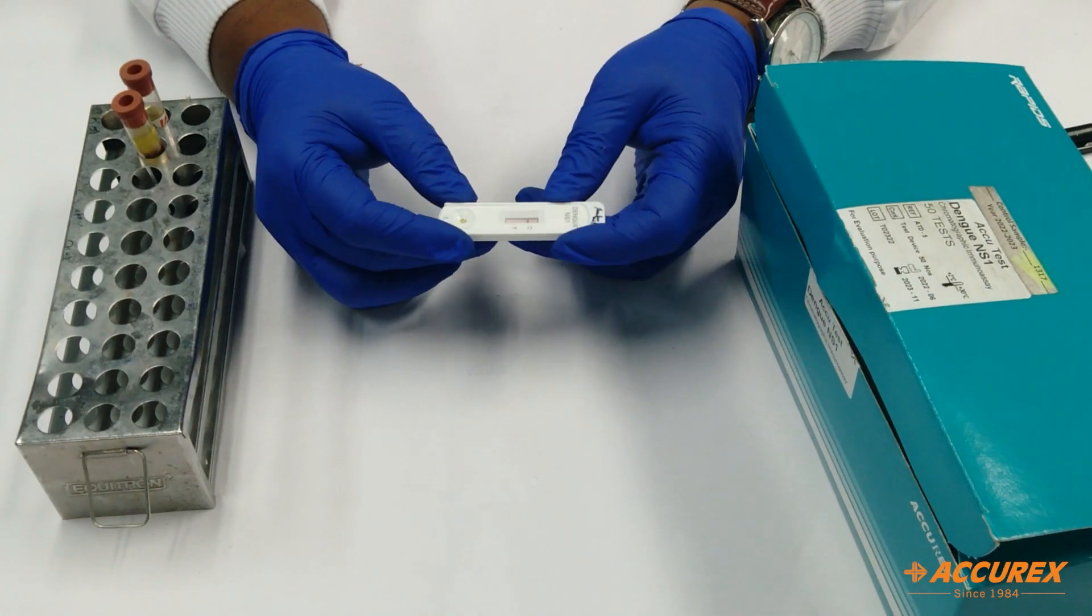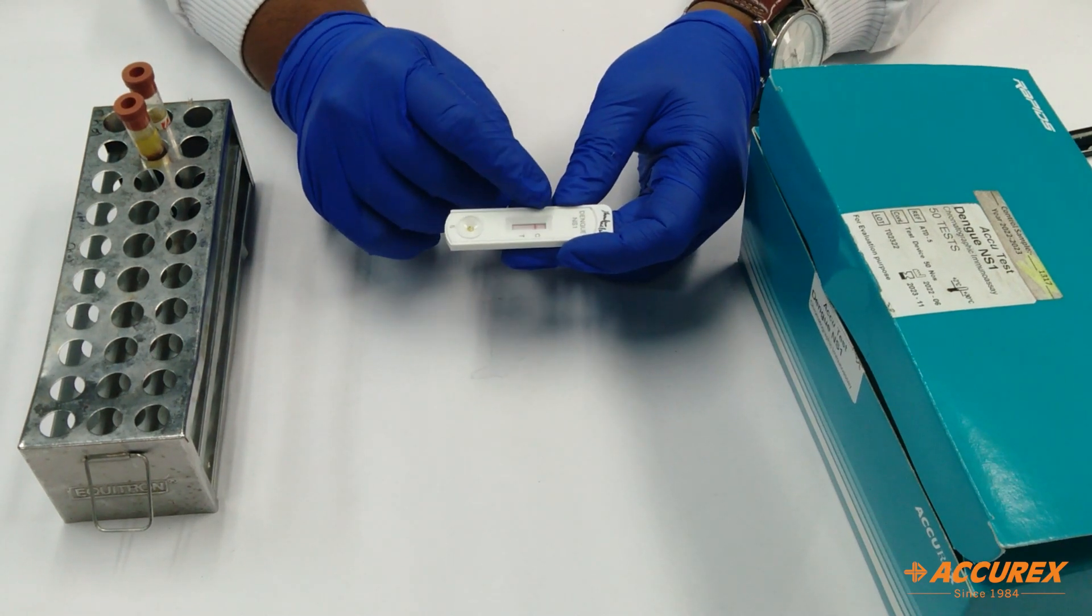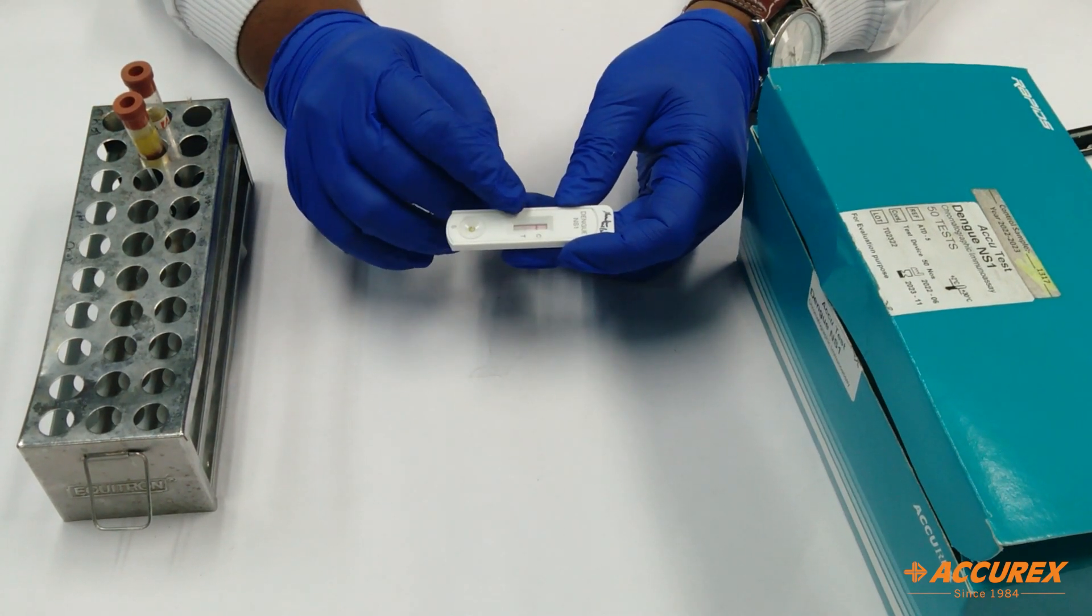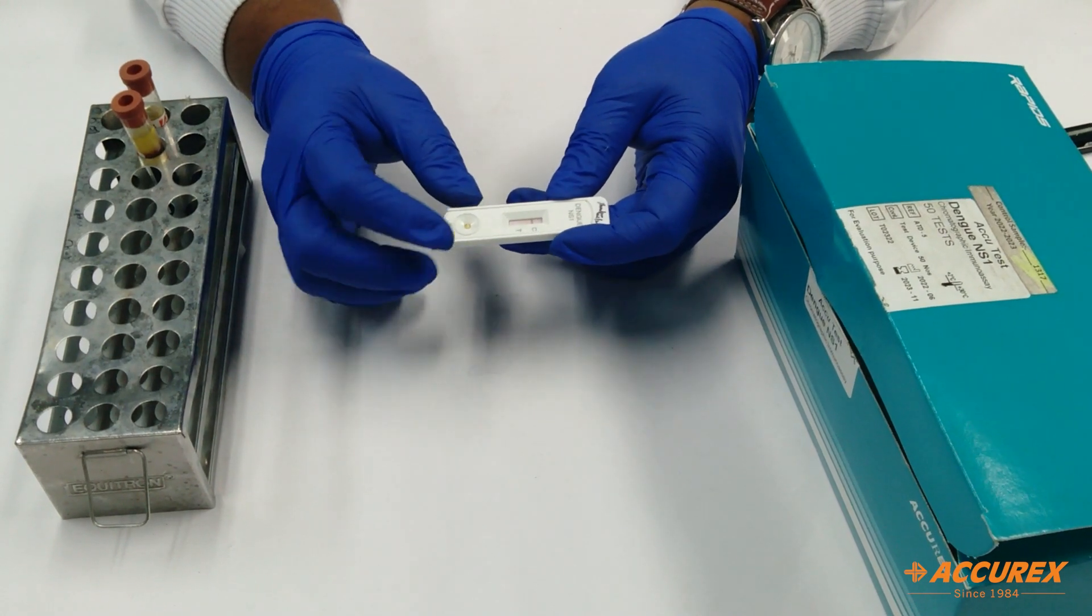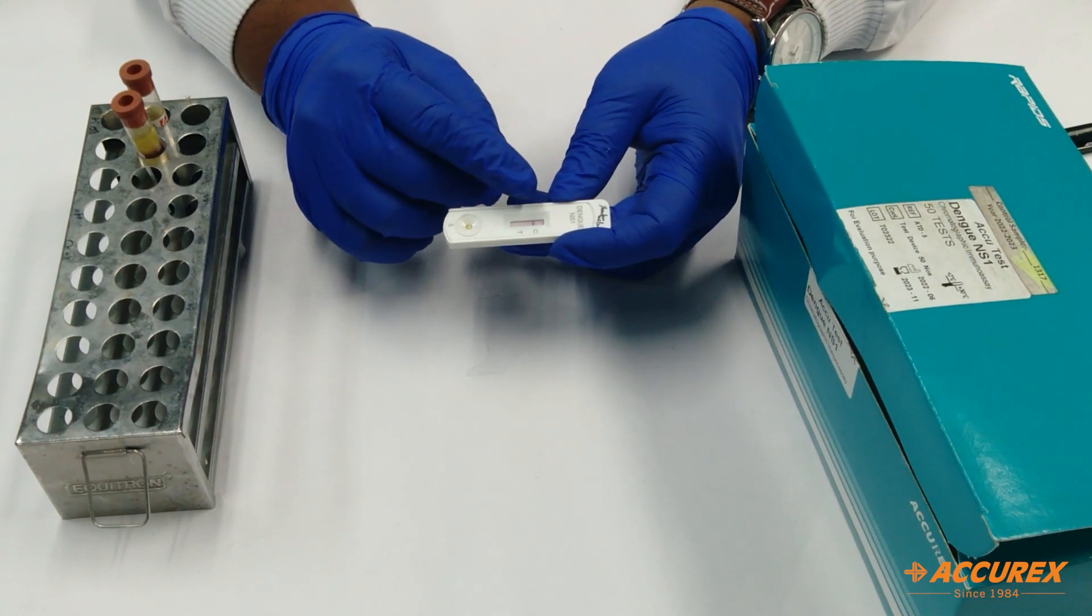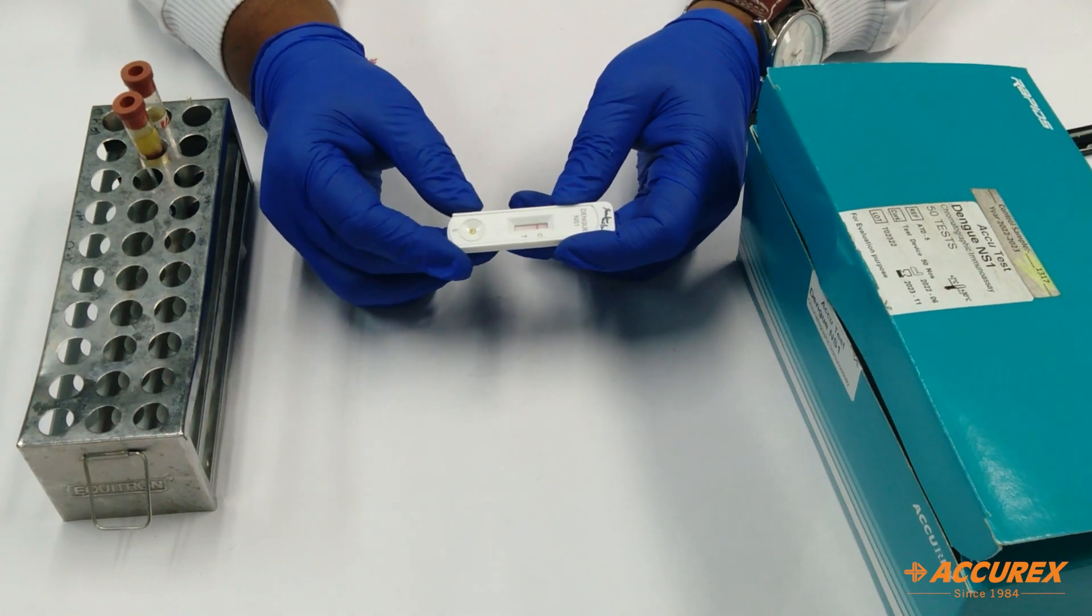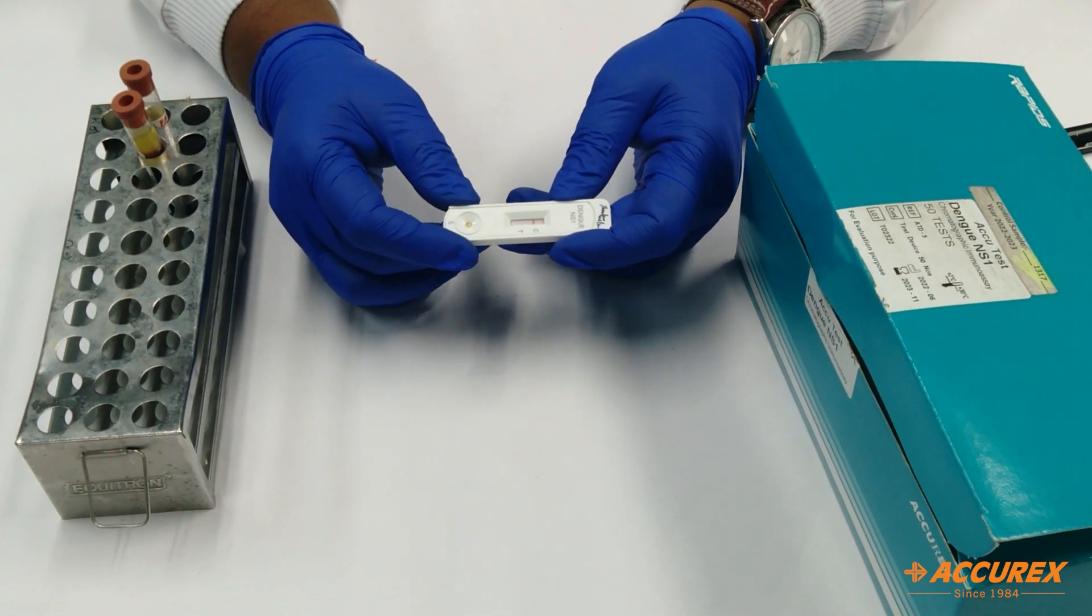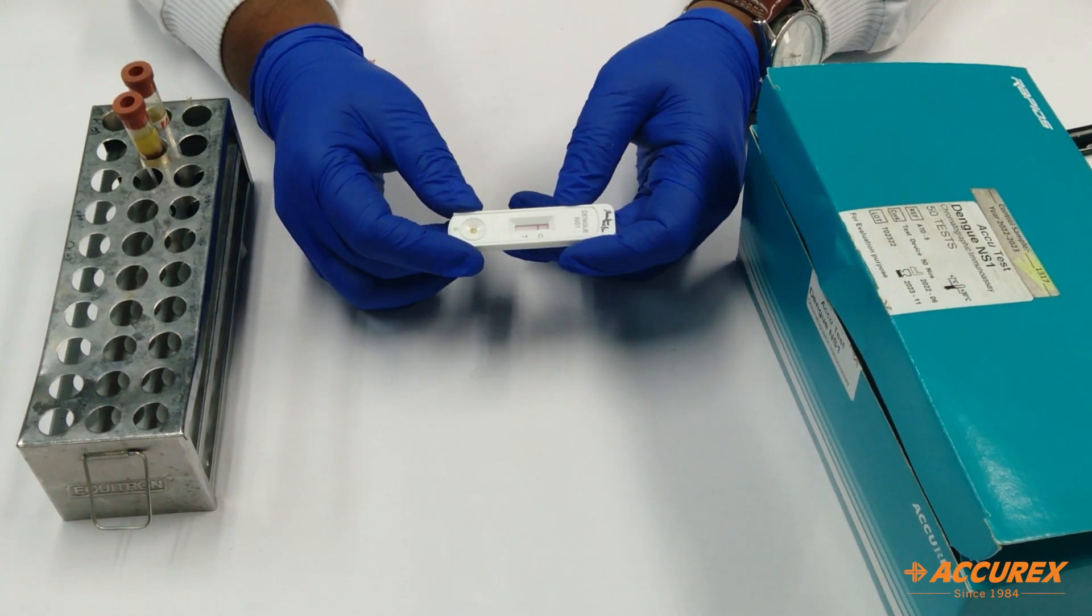The 15 to 20 minutes have been completed. Now you can see the band has appeared at the control line, and there is no band at the test line—this means the dengue NS1 is negative. If there is a band line at test, it means positive. If there is no band at control, it means the card is faulty and you need to check with another card. In this way, you can give the result in 15 to 20 minutes to the patients. Thank you.